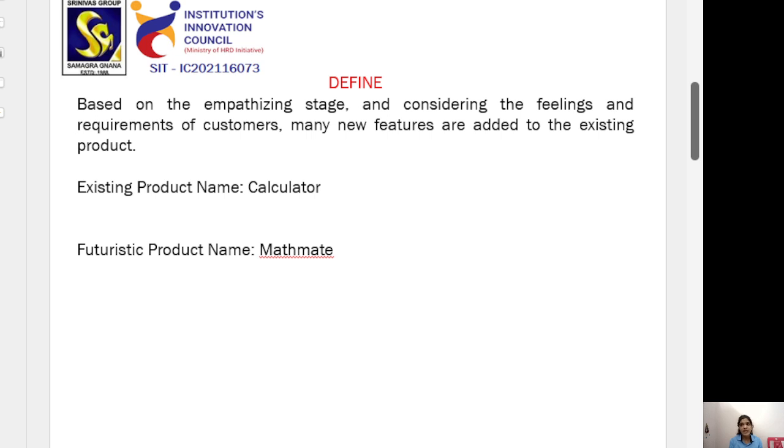The define stage is based on the empathizing stage and considering the feelings and requirements of customers. Many new features are added to the existing product. Existing product name: Calculator. Futuristic product name: Matmate.